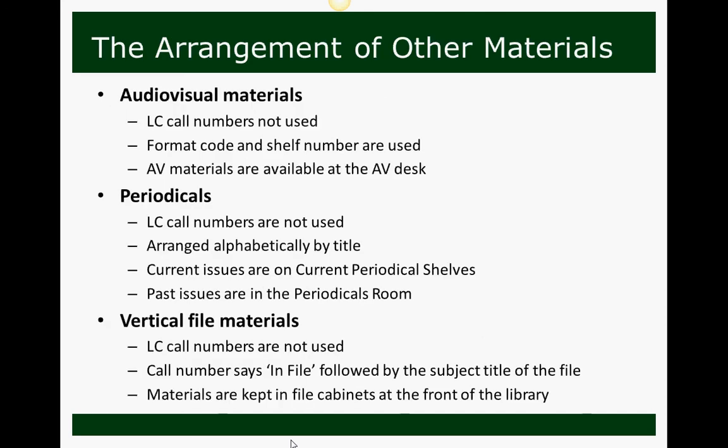At Brooks Cork, the Library of Congress classification system is only used for books — both circulating and reference. For audiovisual materials, Library of Congress call numbers are not used; a format code and shelf number are used instead. You don't need to worry about this because AV materials are requested at the audiovisual or reserve desk and brought to you by a librarian. Periodicals are arranged alphabetically by title — current issues are on the current periodical shelves to the right as you walk in, and past issues up to about a year and a half ago are in the periodicals room in the back left. For vertical file materials or pamphlets, the call number will say 'in file' followed by the subject title, and these materials are kept at the front of the library in the spinning racks.